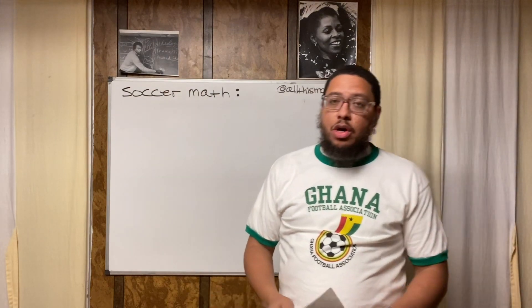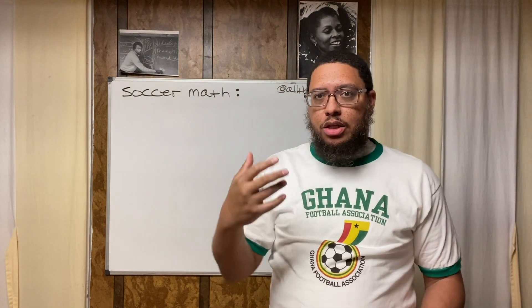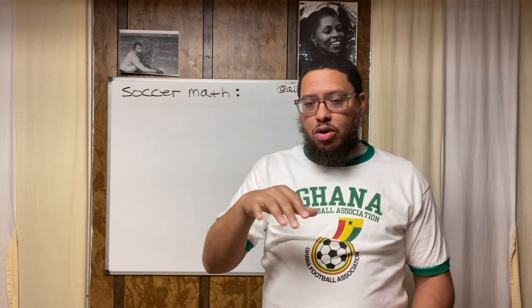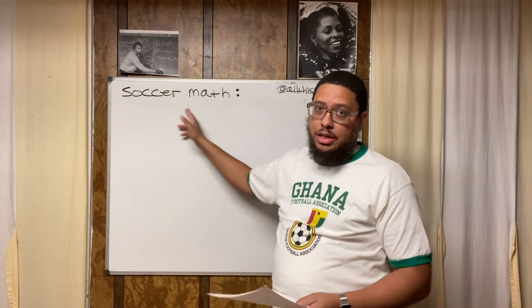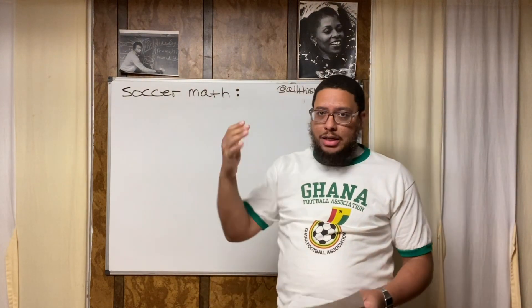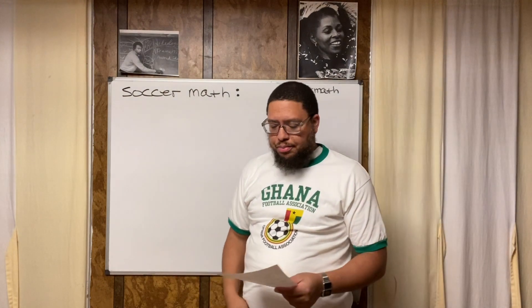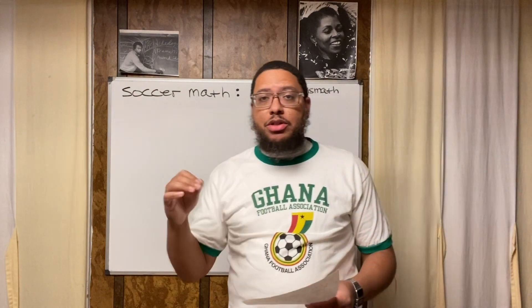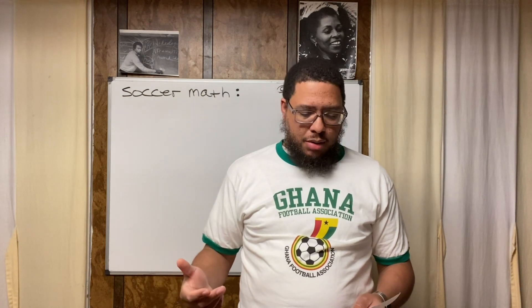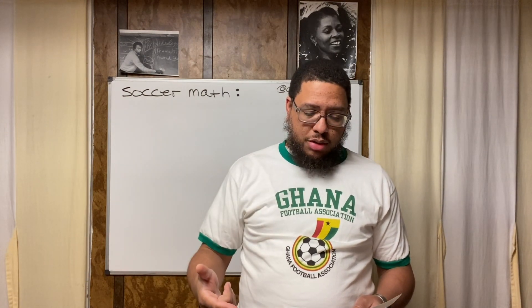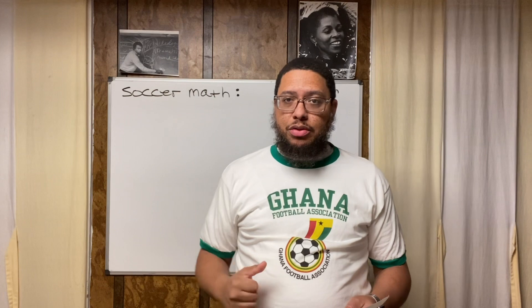The actual word problem is printed below the video in the description section, so read along as I read it out loud. We're dealing with soccer math. If you play soccer, watch soccer, or are a fan of soccer, you should relate to this. The problem reads: the perimeter of a soccer field at a local park is 260 feet. The length of the field is 36 feet more than the width. Find the dimensions of the soccer field.